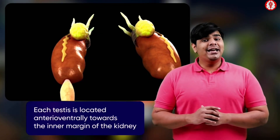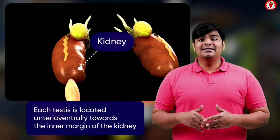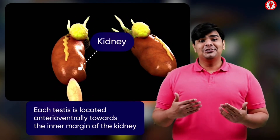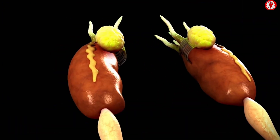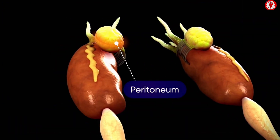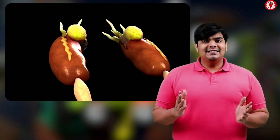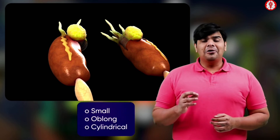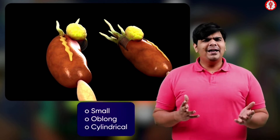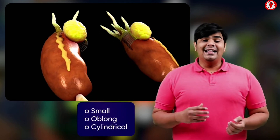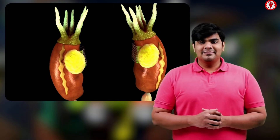Each testis is located anterior ventrally towards the inner margin of the kidney. These testes are enveloped by a layer of peritoneum. Each testis is small, oblong or cylindrical compared to the kidney and slightly yellow in colour.